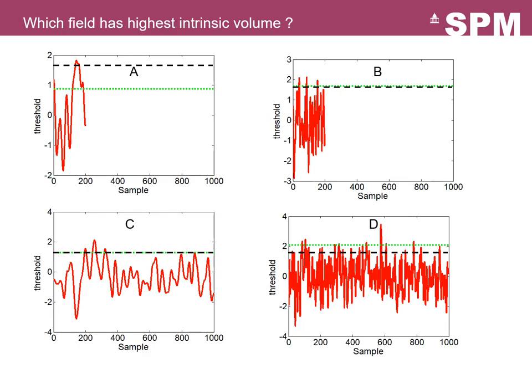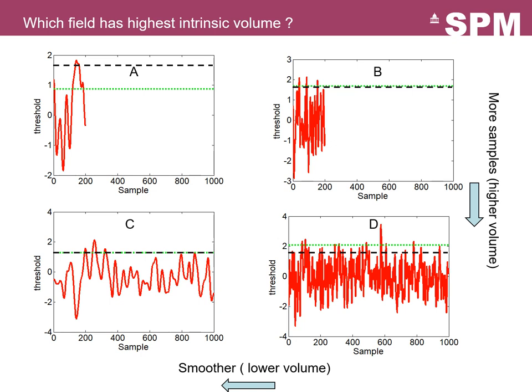To reinforce what affects intrinsic volume: adding more samples increases intrinsic volume, while applying more smoothing to the data decreases it. This means you can have a case with many more samples than another, yet both have the same intrinsic volume, because random field theory captures the rate of change being really slow with respect to space in some scenarios.